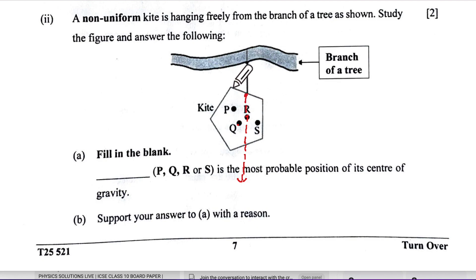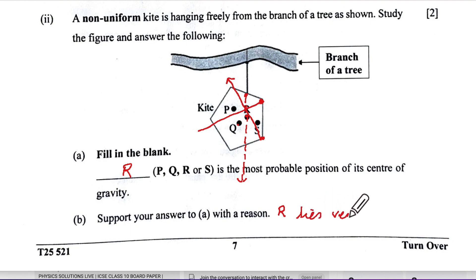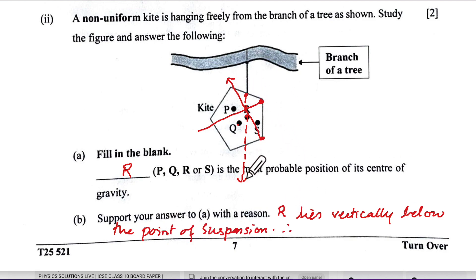For a regular hexagon or pentagon we would drop perpendiculars, but this is an irregular kite. From each suspension point the vertically downward line goes to a different location. The correct answer is R. R lies vertically below the point of suspension — the line drawn vertically downward through the point of suspension passes through R.